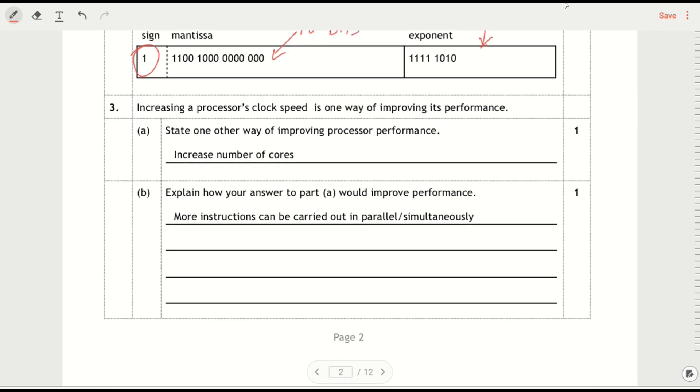3 was about increasing the processor clock speed. So it already says increasing performance. It already says that increasing clock speed is one way of doing it. Other things we could do: we could increase the number of cores, we could increase the width of the data bus, or we could increase the size of the cache.